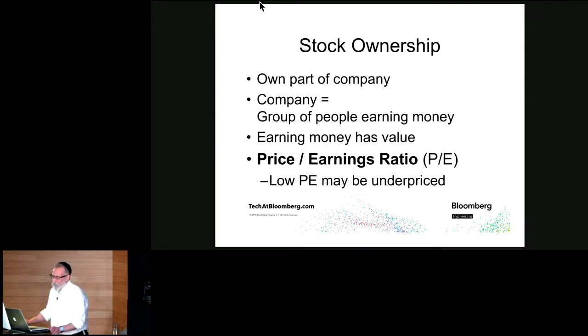So let's talk about stock ownership. When you buy a stock, you actually own part of a company. And what's a company? A company is nothing more than a group of people working together to earn money. Earning money has value. And in a sense, that's what you're buying when you're buying a stock. You're buying the power to earn money. And for that reason, what a lot of people like to look at with a stock is they look at the price earnings ratio, the price of the stock divided by the earnings of the company. And there's a concept that if the price earnings ratio is low, then you're getting a bargain. You're paying less for the same amount of earnings.